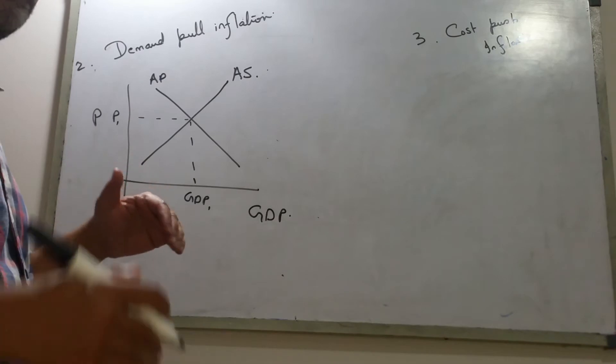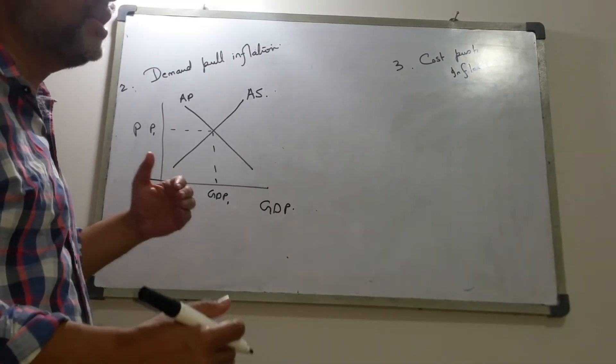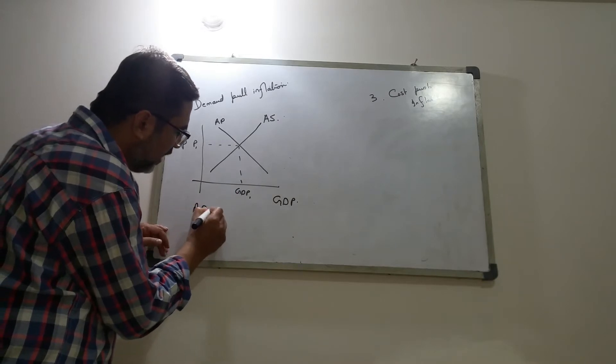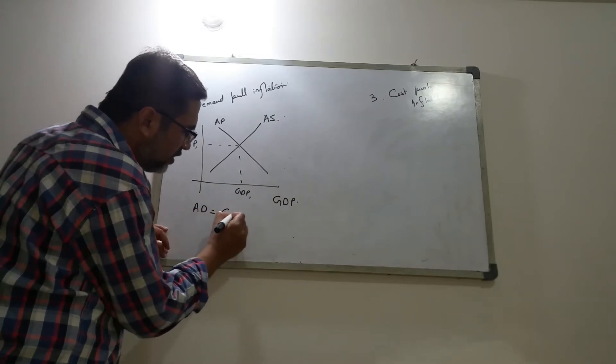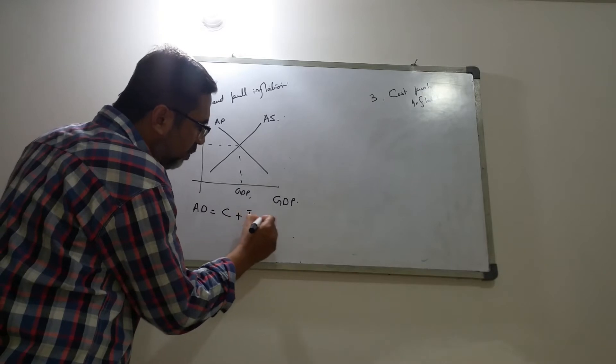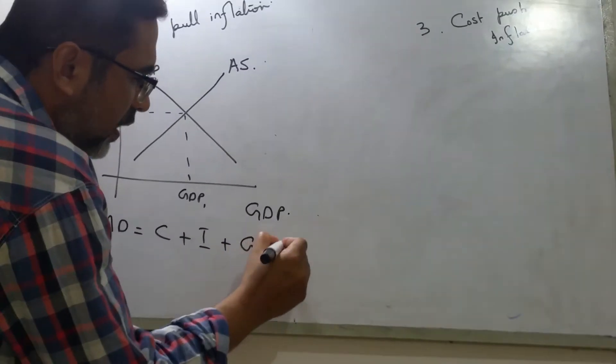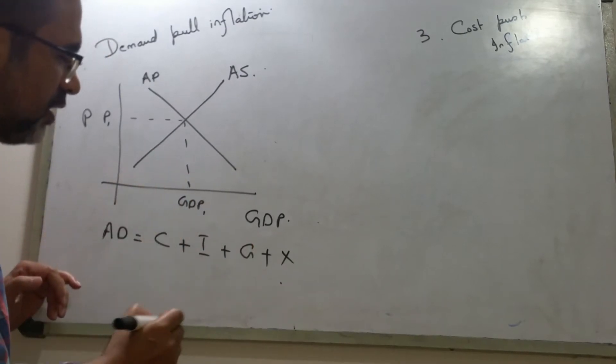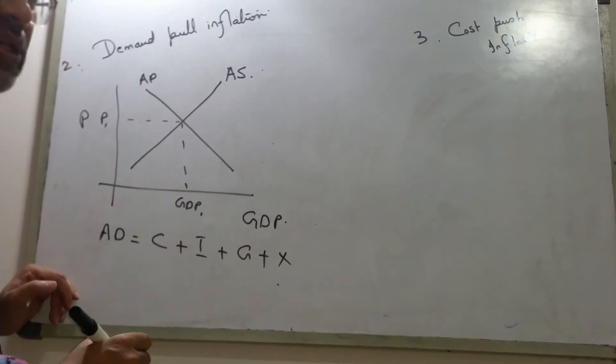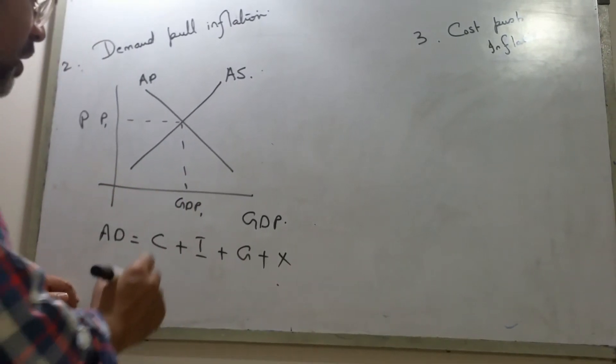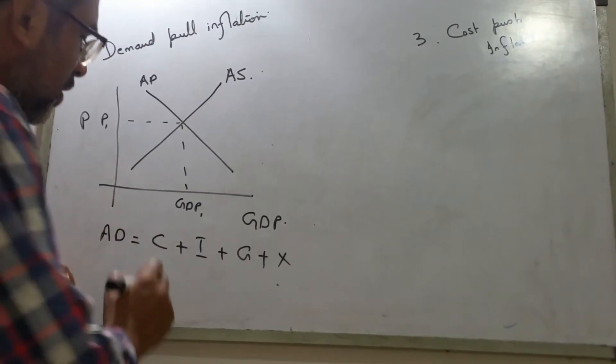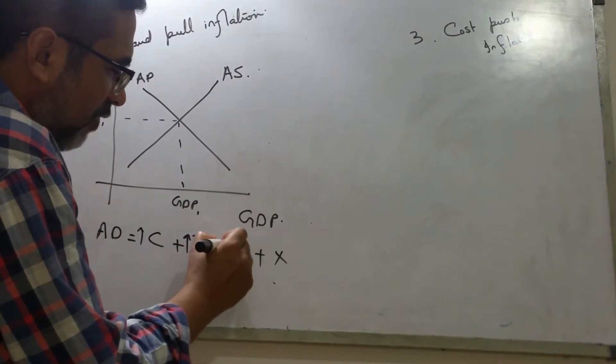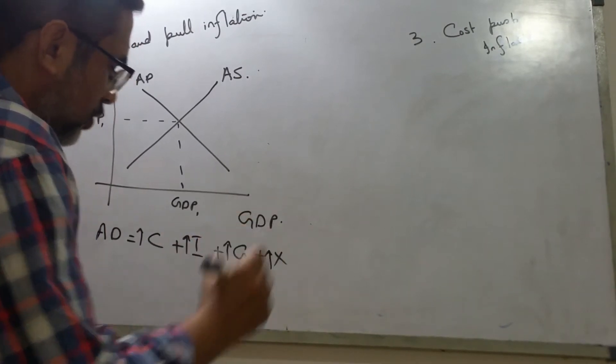So what happens if the aggregate demand increases? And why would aggregate demand increase? The formula for aggregate demand is AD equals C plus I plus G plus X, where X is net exports, G is government expenditure, I is the investment, and C is the consumption by the individual. So if the consumption goes up, or investment goes up, or government spending goes up, or the exports go up, the aggregate demand will go up.